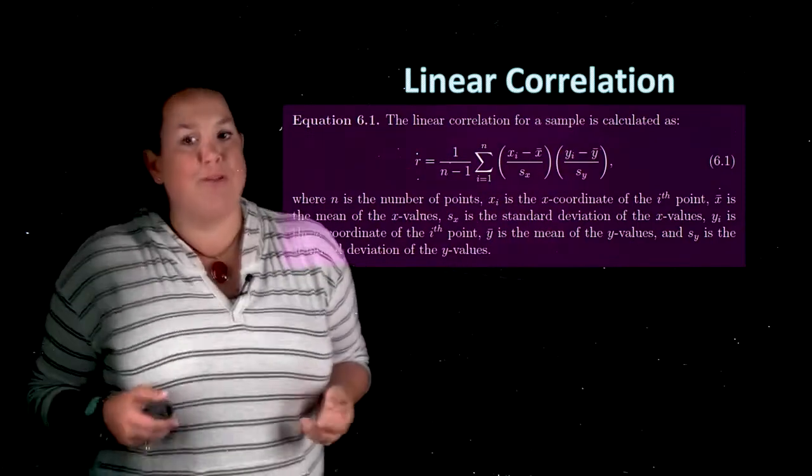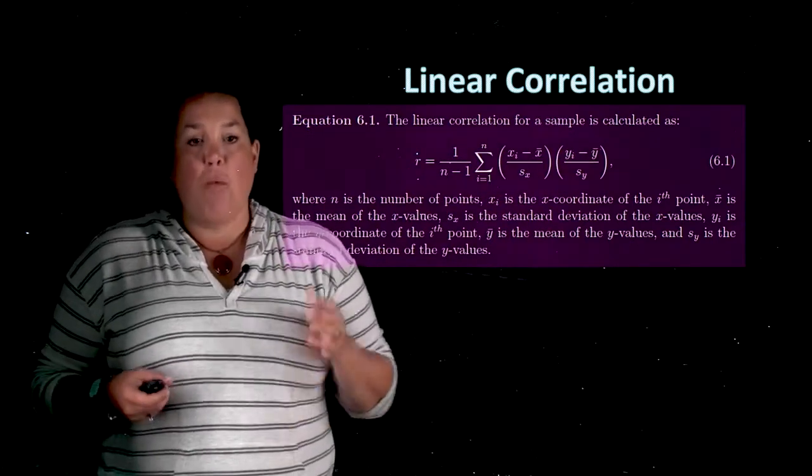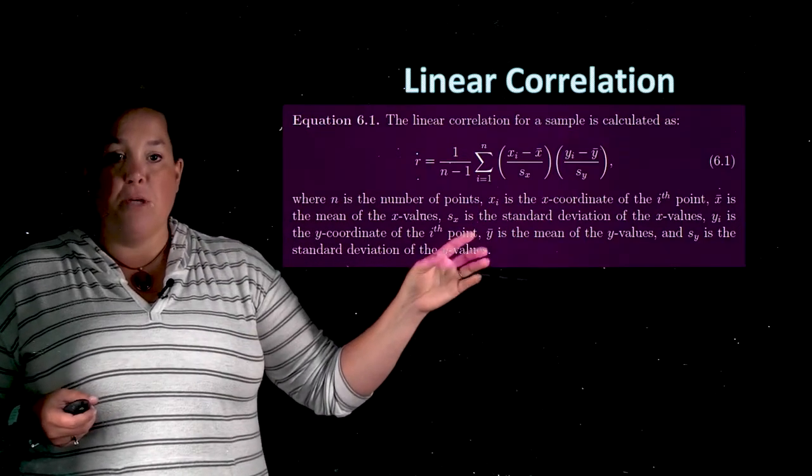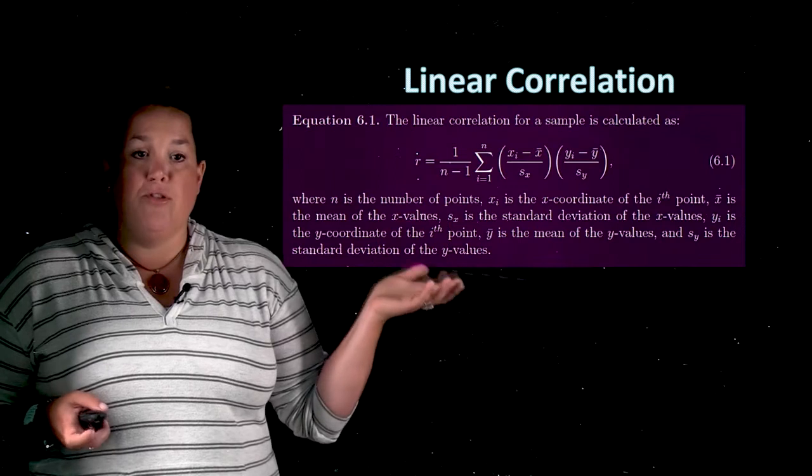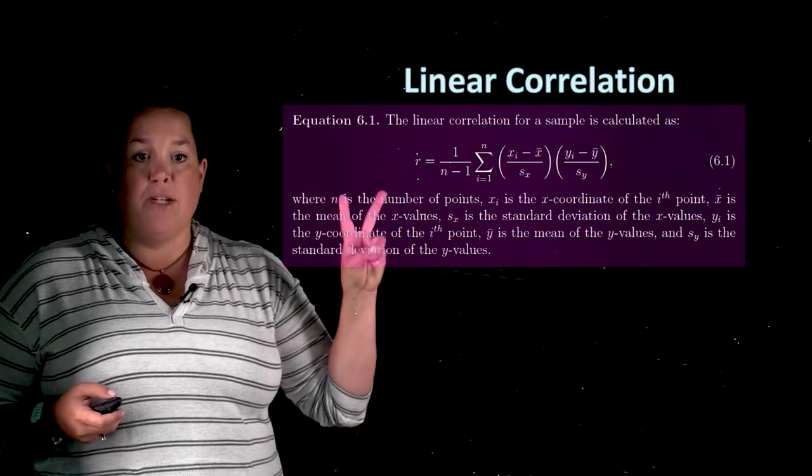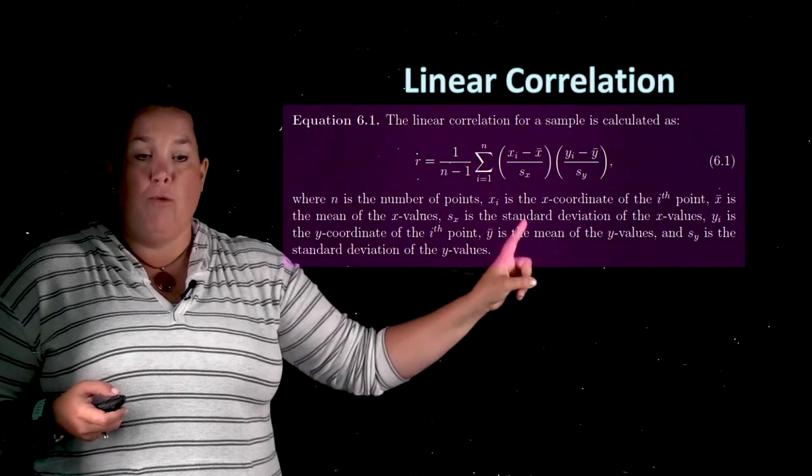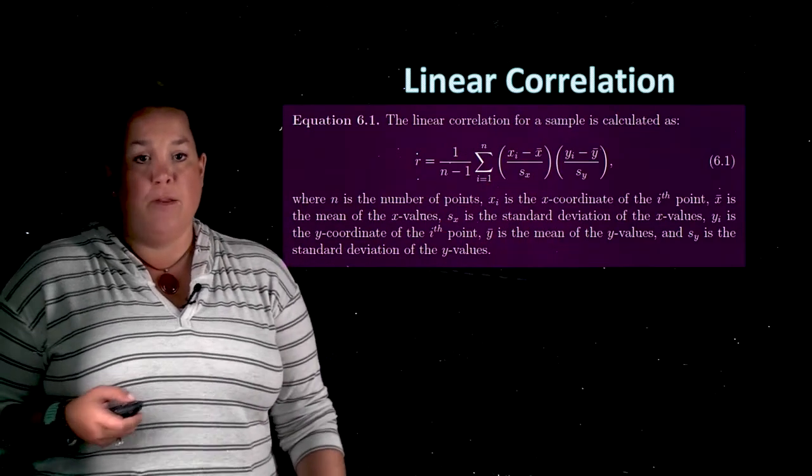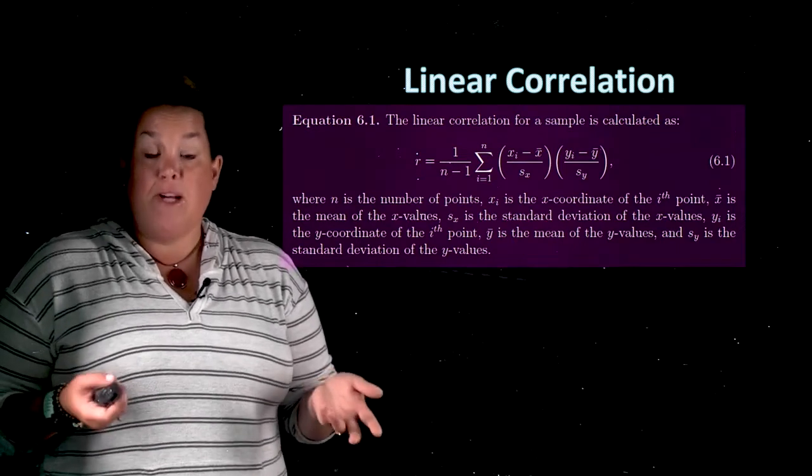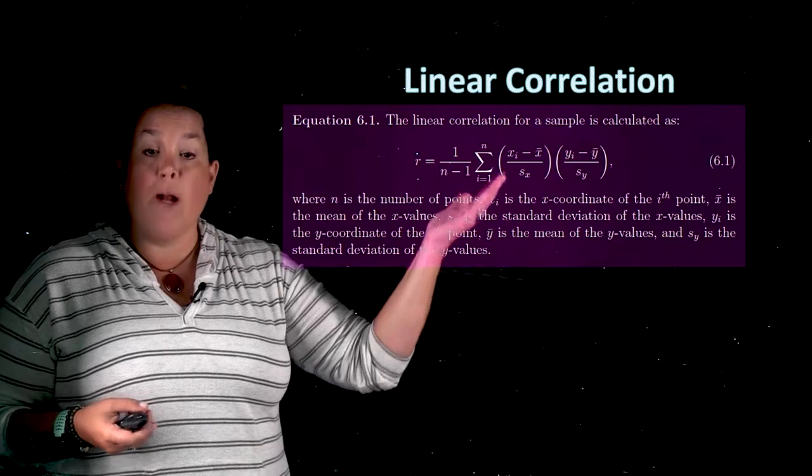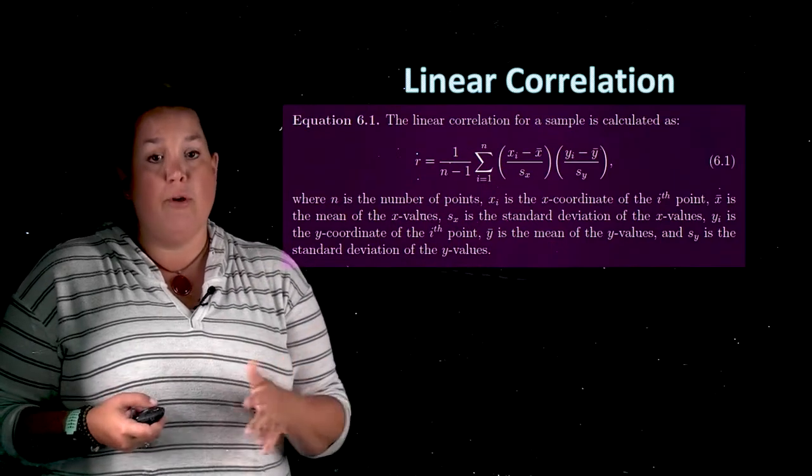We have computing packages that will do that work for us, but one thing that I want you to know is that r is going to be the information on both the strength and direction of the relationship between these two quantitative variables. One variable being represented in the x's, and then one variable being represented in the y's. That hopefully should make sense to you, why we need it to be two quantitative variables because these are quantities. You can't have categorical variables in this spot.